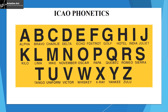The phonetics of the alphabet go as: Alpha, Bravo, Charlie, Delta, Echo, Foxtrot, Golf, Hotel, India, Juliet, Kilo, Lima, Mike, November, Oscar, Papa, Quebec, Romeo, Sierra, Tango, Uniform, Victor, Whiskey, X-ray, Yankee, Zulu. This is how alphabets in aviation are transmitted.